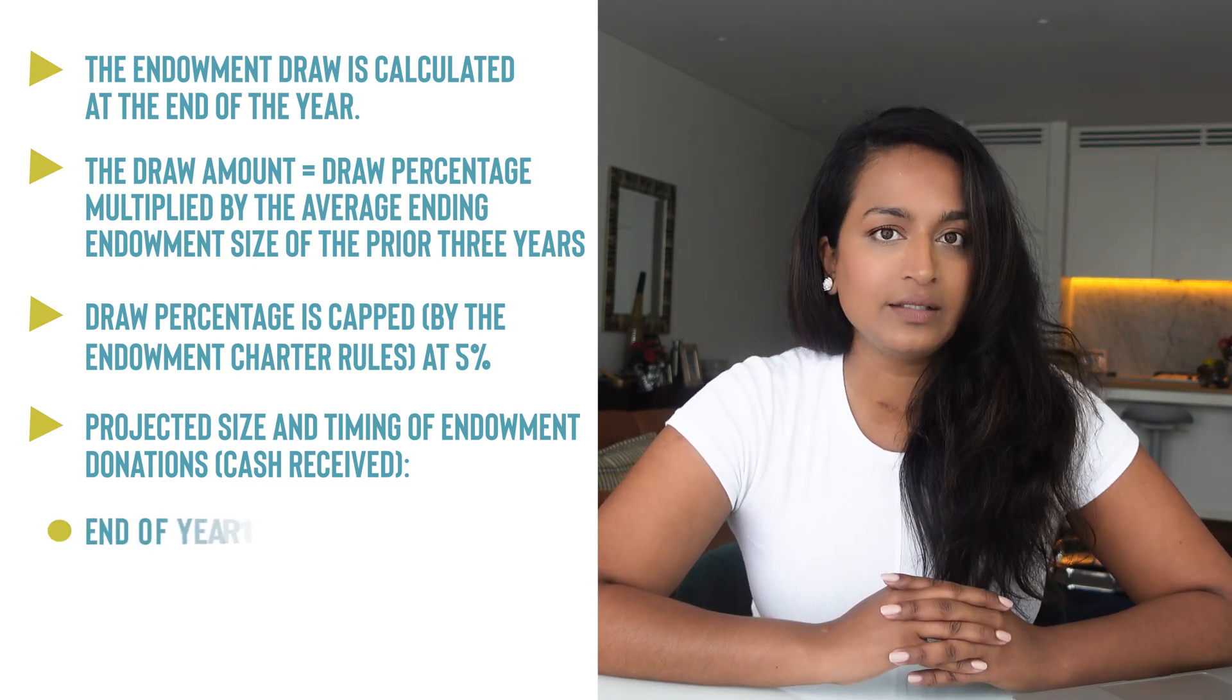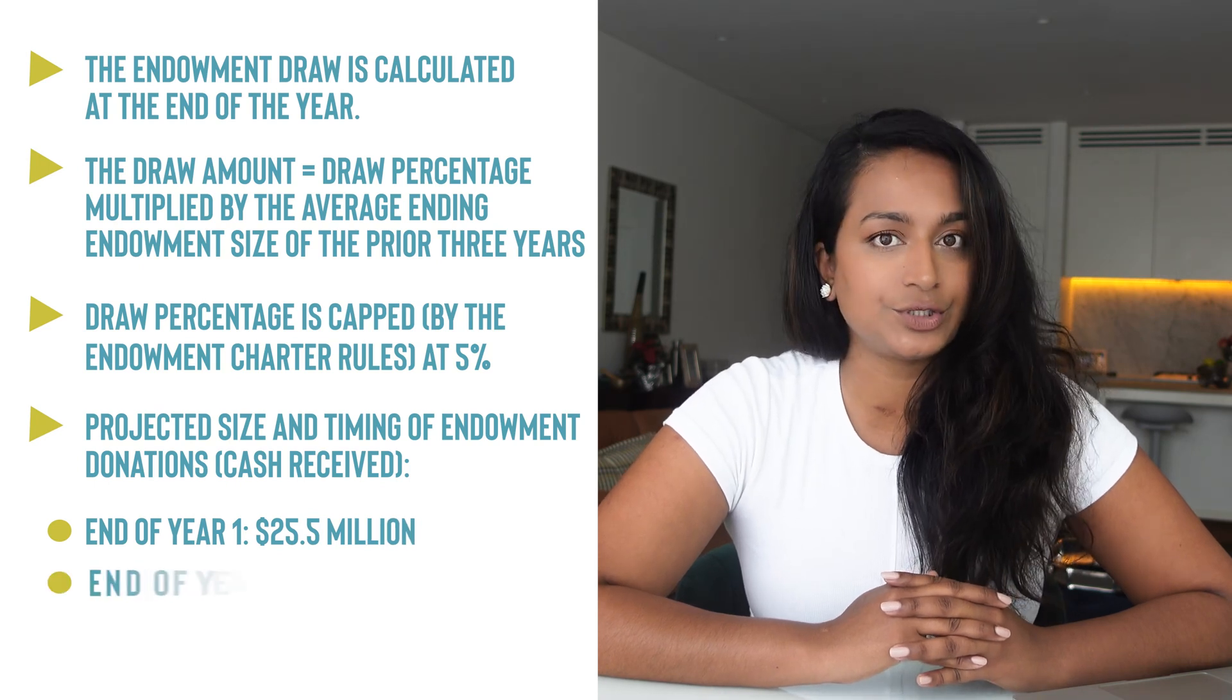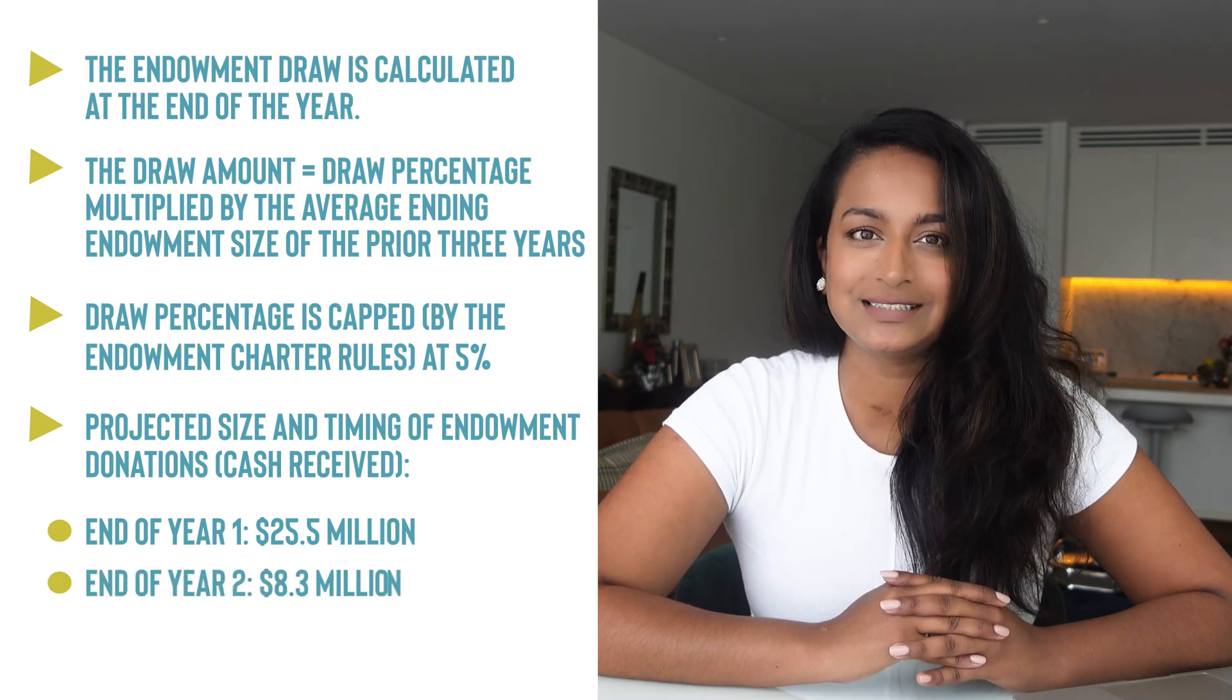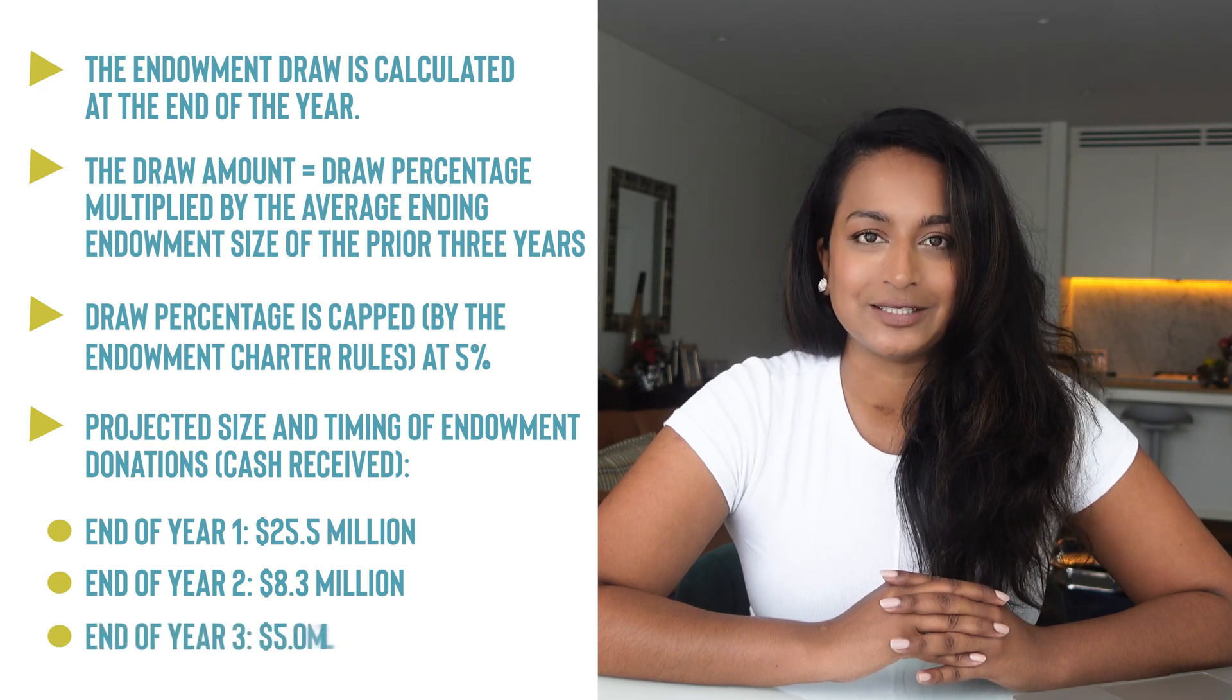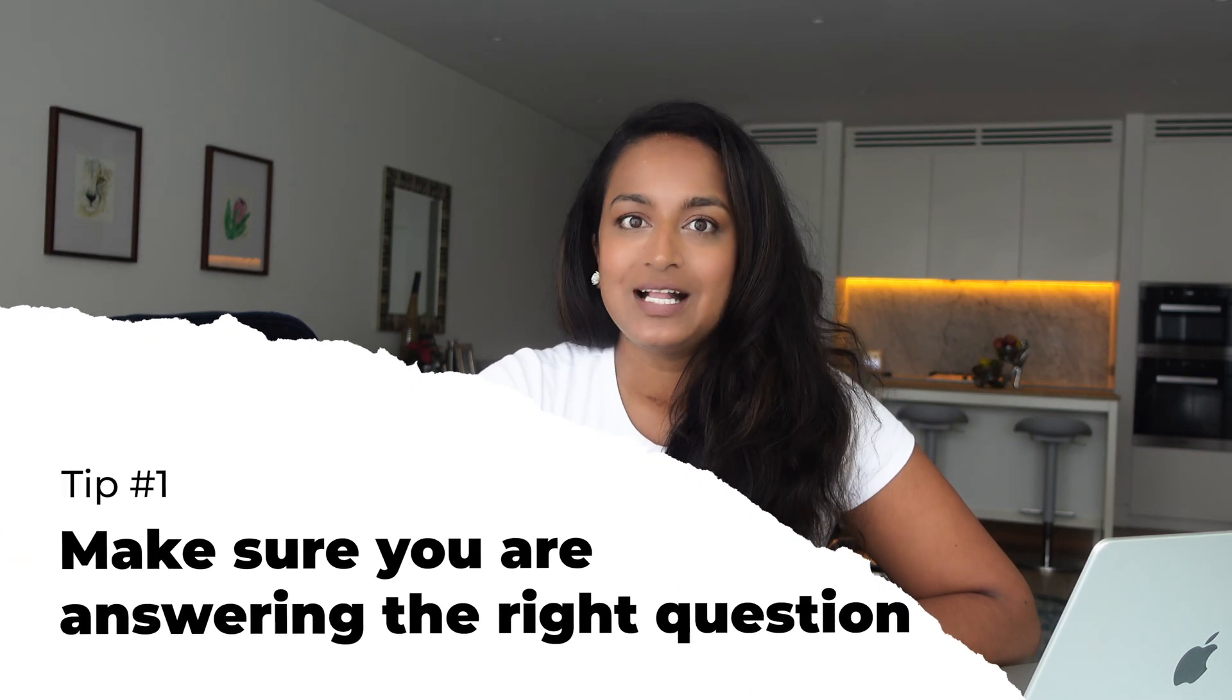And the projected size and timings of the endowment donations are as follows. At the end of year one, $25.5 million. At the end of year two, $8.3 million. And at the end of year three, $5 million. At this point, you want to make sure you are answering the right question. So as the candidate, I would say, so you're looking for the draw amount at the end of year three, and we'd like it to exceed $3 million.